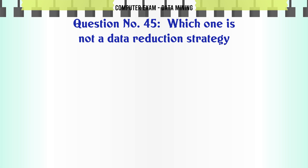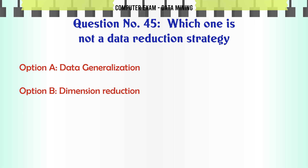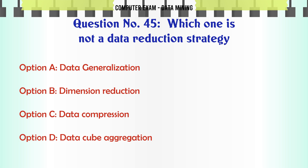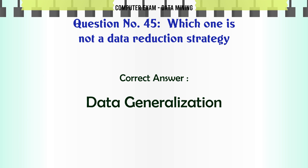Which one is not a data reduction strategy? A. Data generalization. B. Dimension reduction. C. Data compression. D. Data cube aggregation. The correct answer is Data generalization.